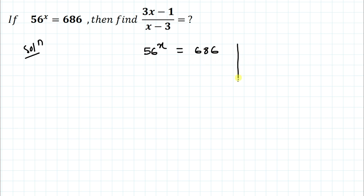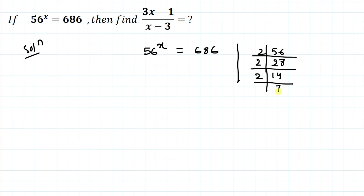First, I will factorize 56. Since the unit place is even, I'll divide by 2: 56 divided by 2 is 28, divided by 2 is 14, divided by 2 is 7. So 56 is nothing but 2 cubed multiplied with 7. This gives us (2³ × 7) to the power x on the left side.